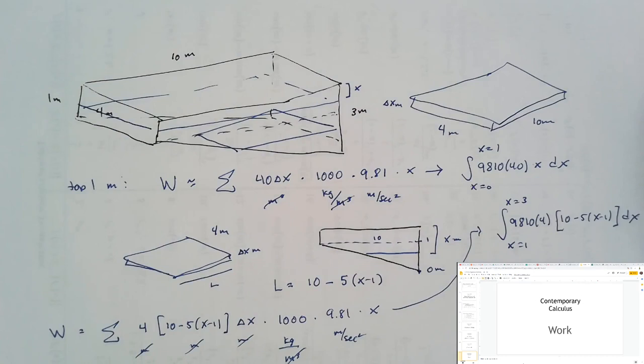These work problems will have several different variations, but the key to all of them is to slice the object we're moving into small pieces, construct a Riemann sum, let that converge to a definite integral, and then work out the definite integral to find the total amount of work.